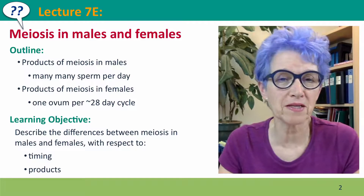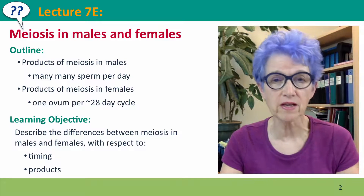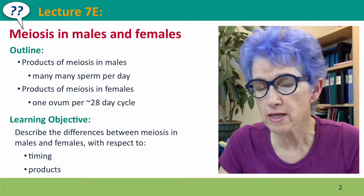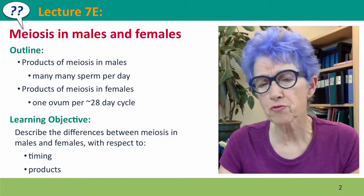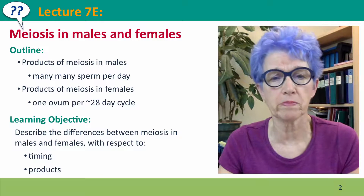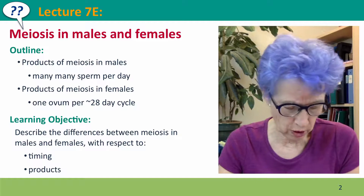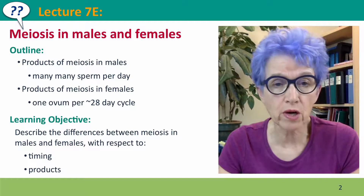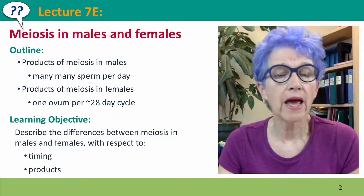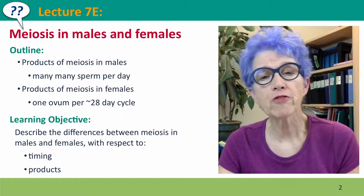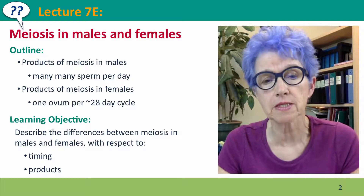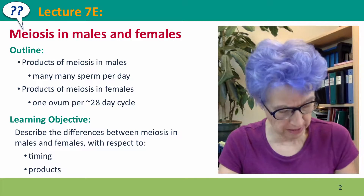Hi everyone, welcome back to lecture 7E of Useful Genetics. We're going to talk briefly about the differences in meiosis between males and females — the products of meiosis in males and females, and the timing of when meiosis happens in each.